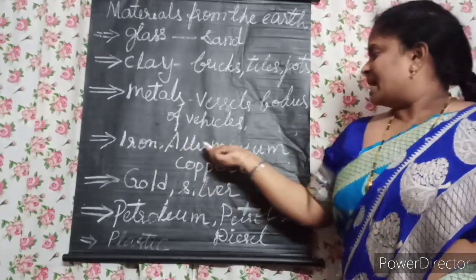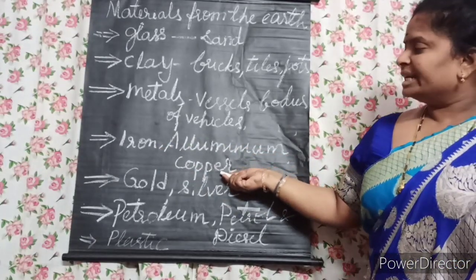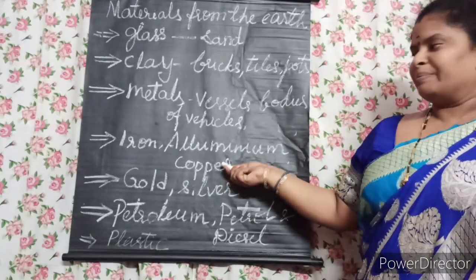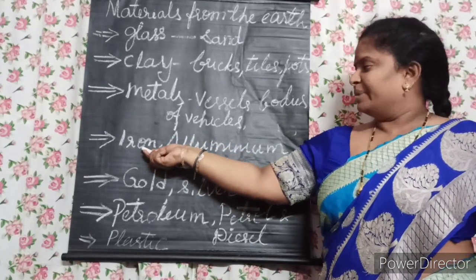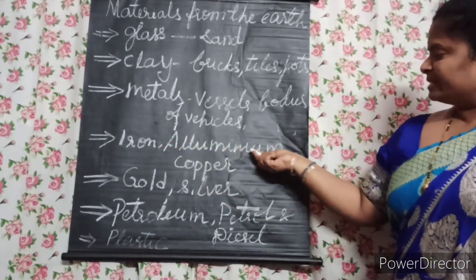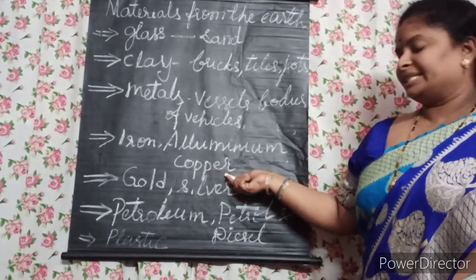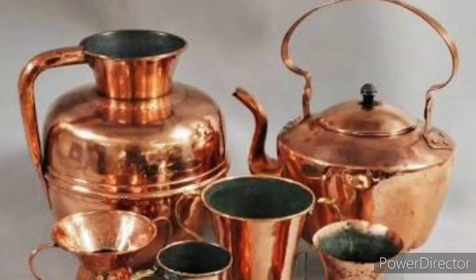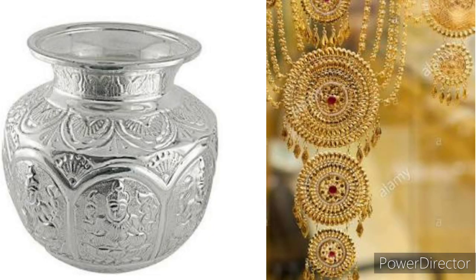Iron, aluminium, and copper are commonly used metals. Iron is used to make vessels and in buildings. Aluminium is used to make vessels, and copper is used in making wires. Gold and silver are used in making jewellery.